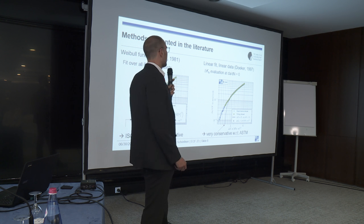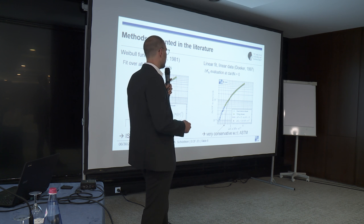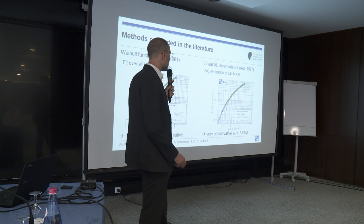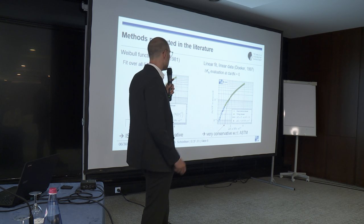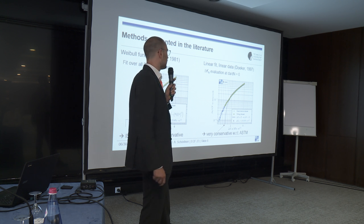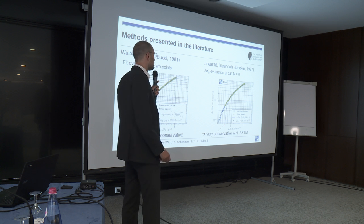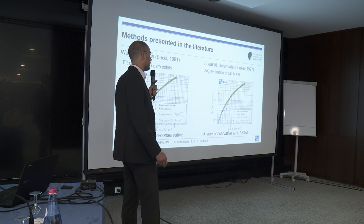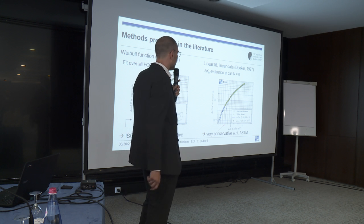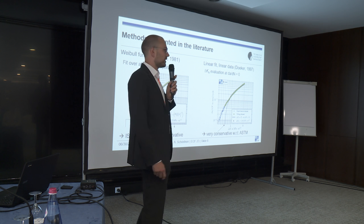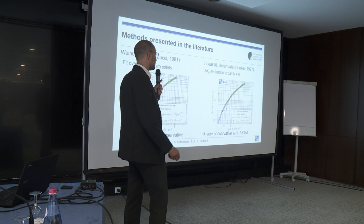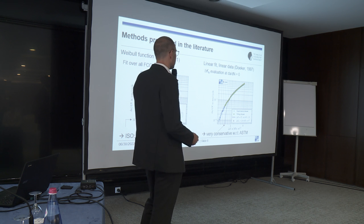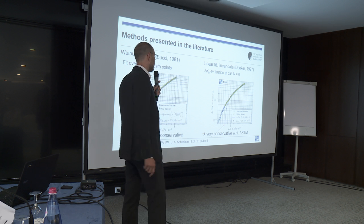The second method, written in the vicinity of the ASTM standard, was proposed by Döker in 1997. He proposed using an interval from 5×10⁻⁸ to 1×10⁻⁶ mm/cycle crack growth rate and evaluating a linear fit on linear data. To calculate the threshold stress intensity factor, you calculate the intersection point with zero crack growth rate. This gives a threshold stress intensity factor of about 2.6 MPa√m — quite conservative regarding the ASTM standard and not really applicable for the ISO standard.